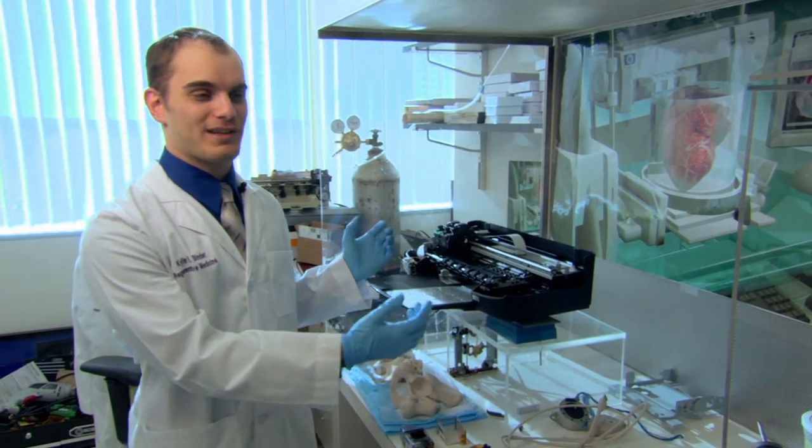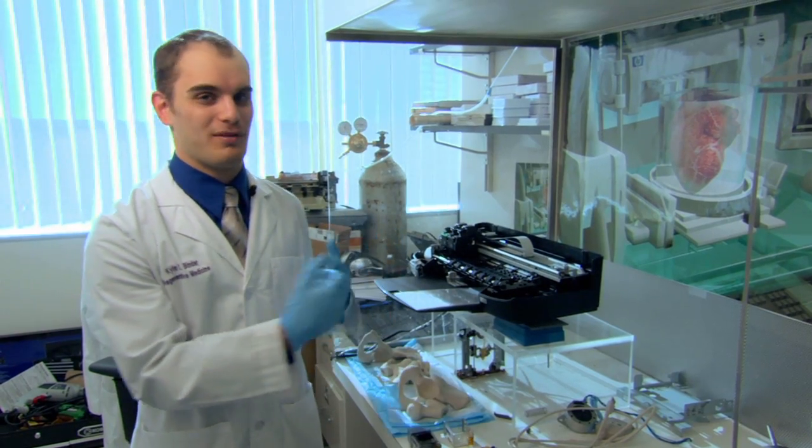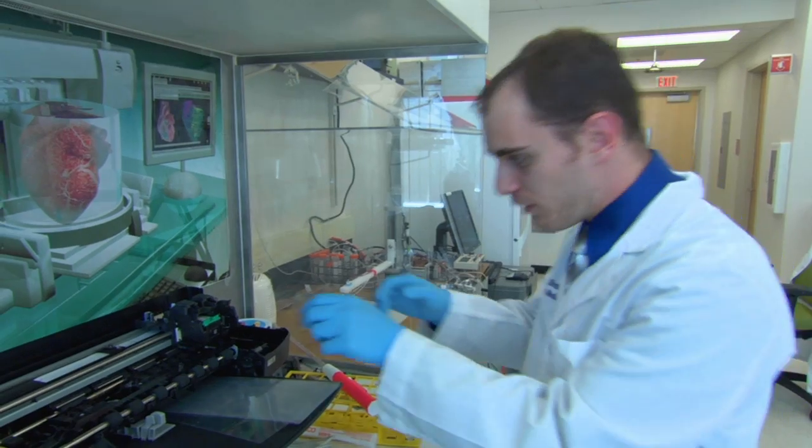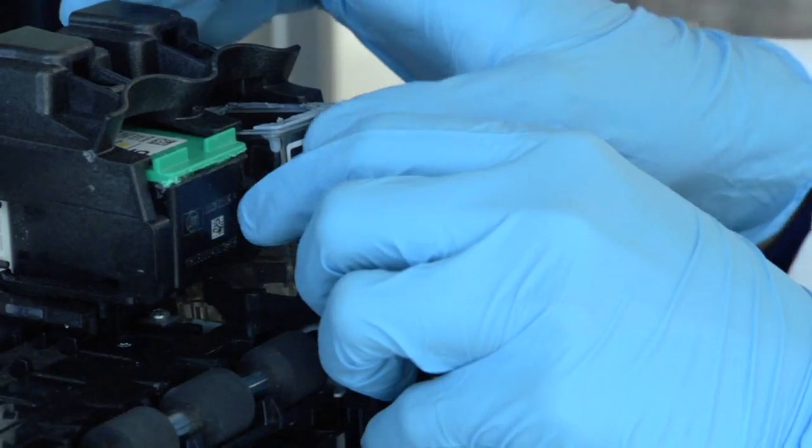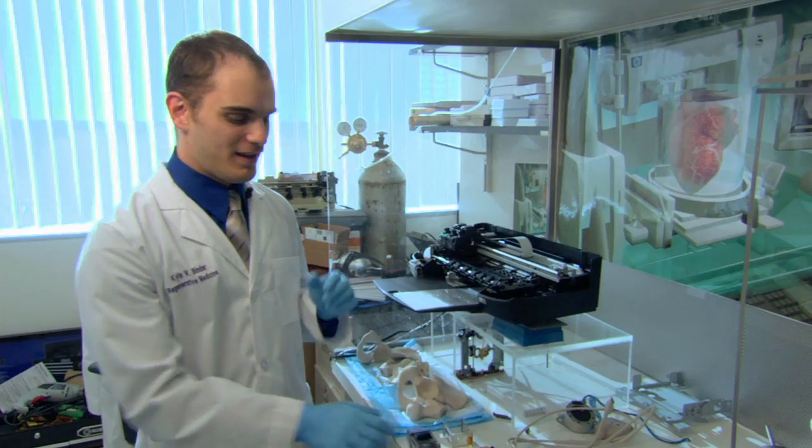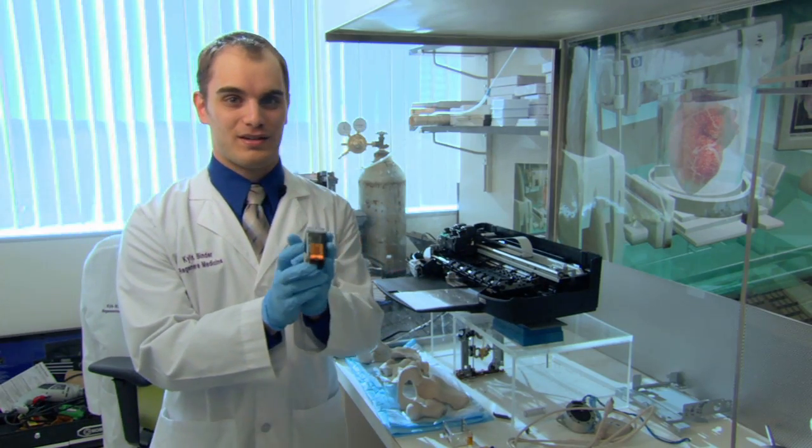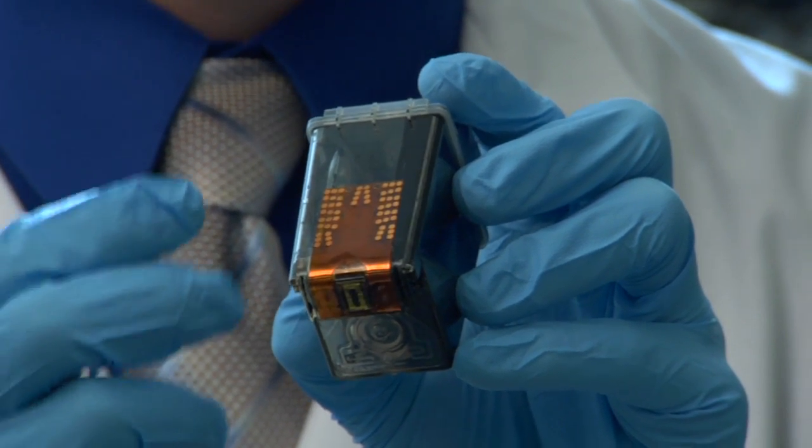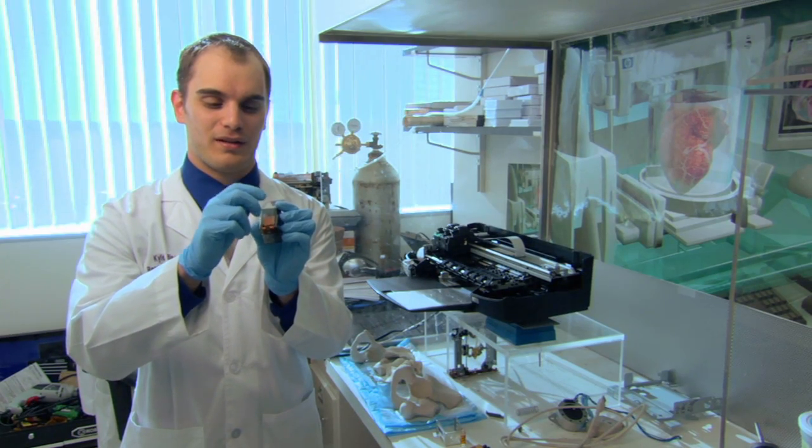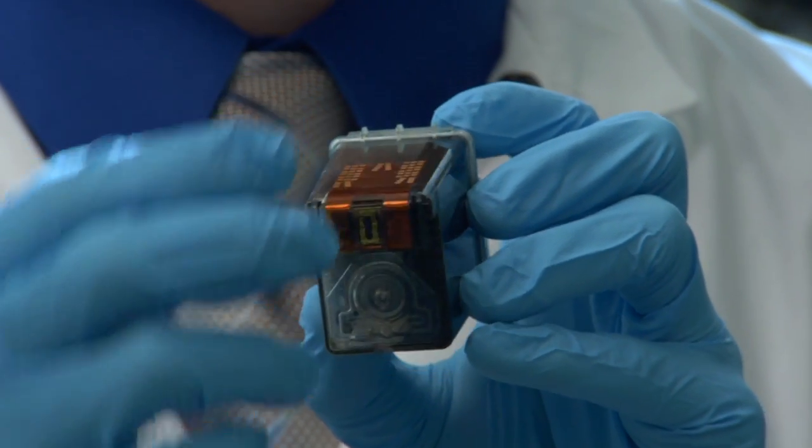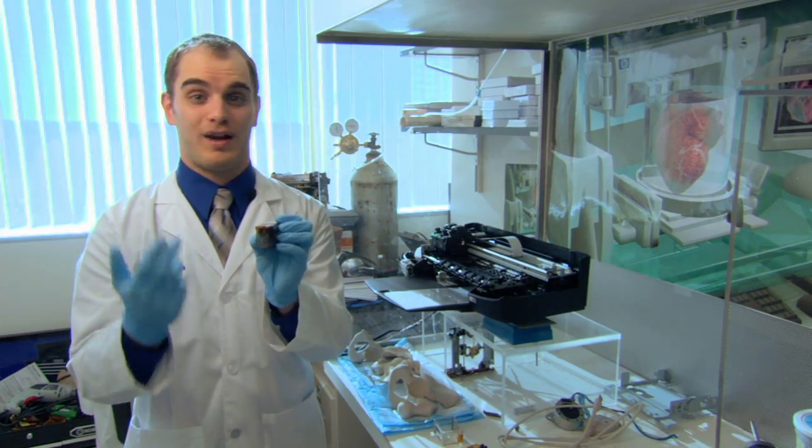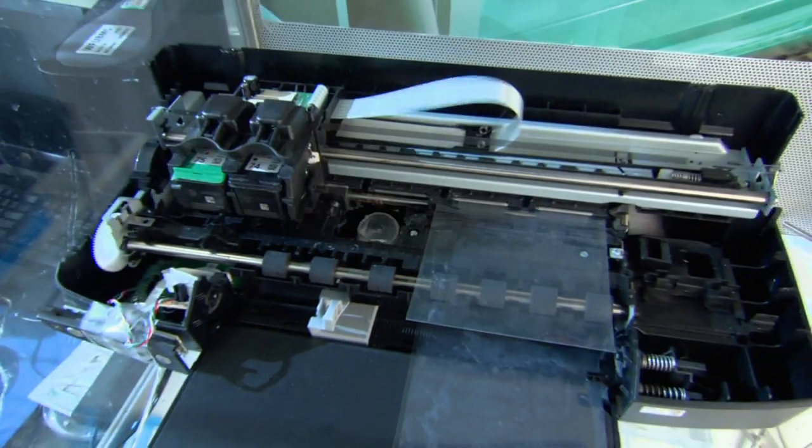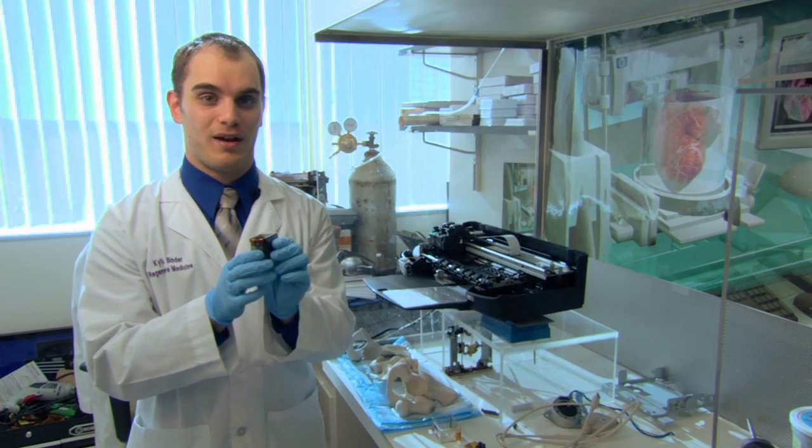So this is a normal inkjet printer that we've taken apart and modified for cell printing. We just load the cells right where the ink goes instead of ink. Now here is a regular inkjet cartridge. When the printer wants to drop a drop of ink, it simply sends a signal to one of these resistors which heats up this copper wire, and that causes a bubble to form in the ink which drops out a drop. That drop is roughly the same size as a cell, and that's how we can get single cell precision.